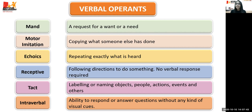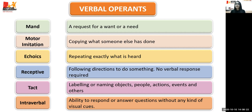We'll discuss all of these in detail in the coming slides. The learning within one verbal operand promotes the growth of other verbal operands. For example, under receptive, if we teach the child to follow the instruction 'give cookie,' once the child learns that, we transfer it to tacting — naming. When we ask 'what's this?' the child names cookie. Then we move on to intraverbal — when we ask 'what did you eat for snack?' the child says cookie. So these are all connected.